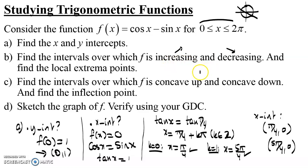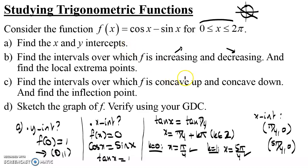Studying the variation of a function depends on the sign of its first derivative. When the first derivative is positive, the function is increasing; when negative, the function is decreasing. This is because the first derivative represents the slopes of the tangents at different points of the curve — if the slopes are positive the curve increases, and if negative it decreases.